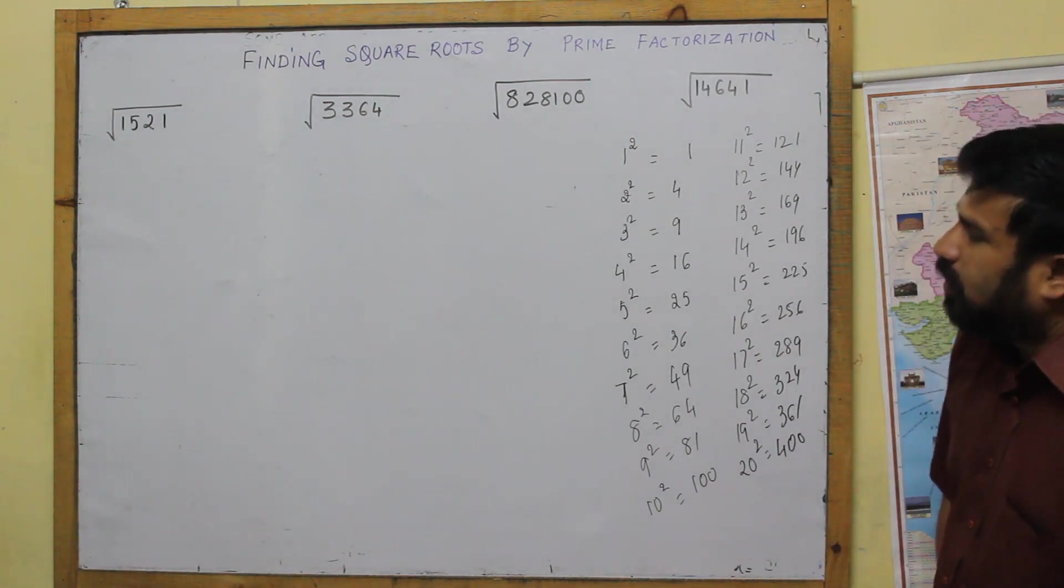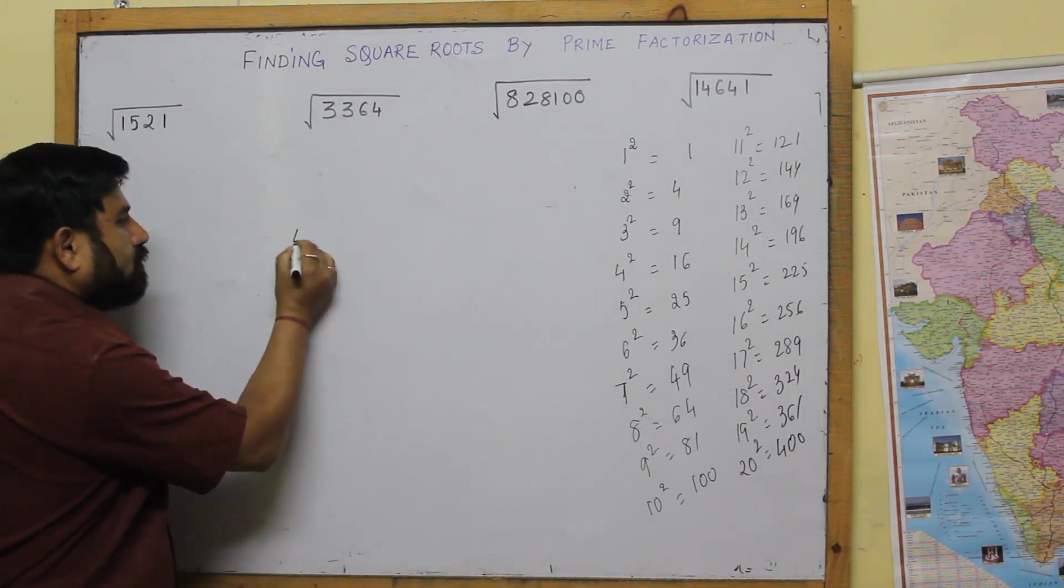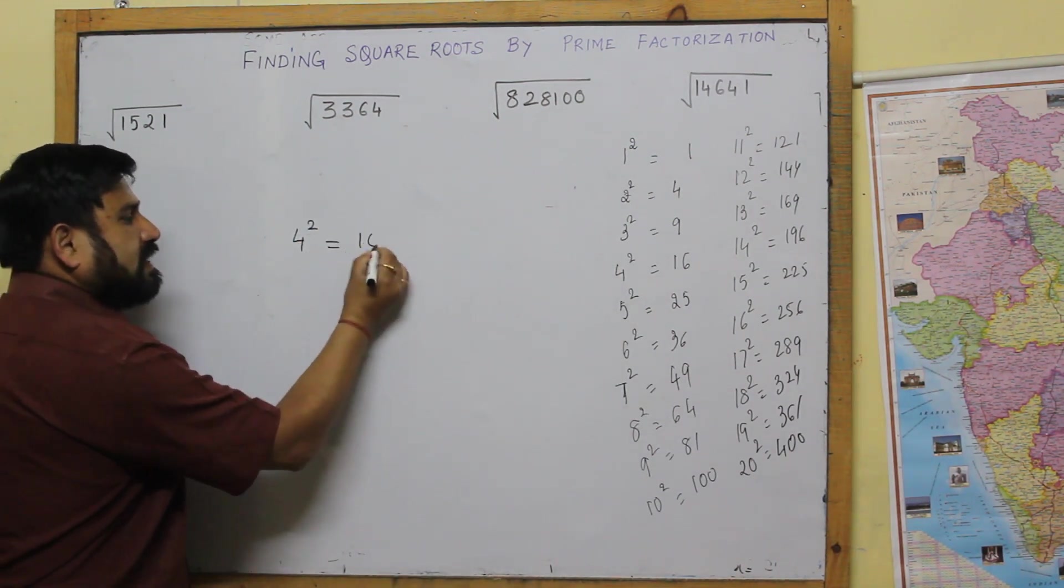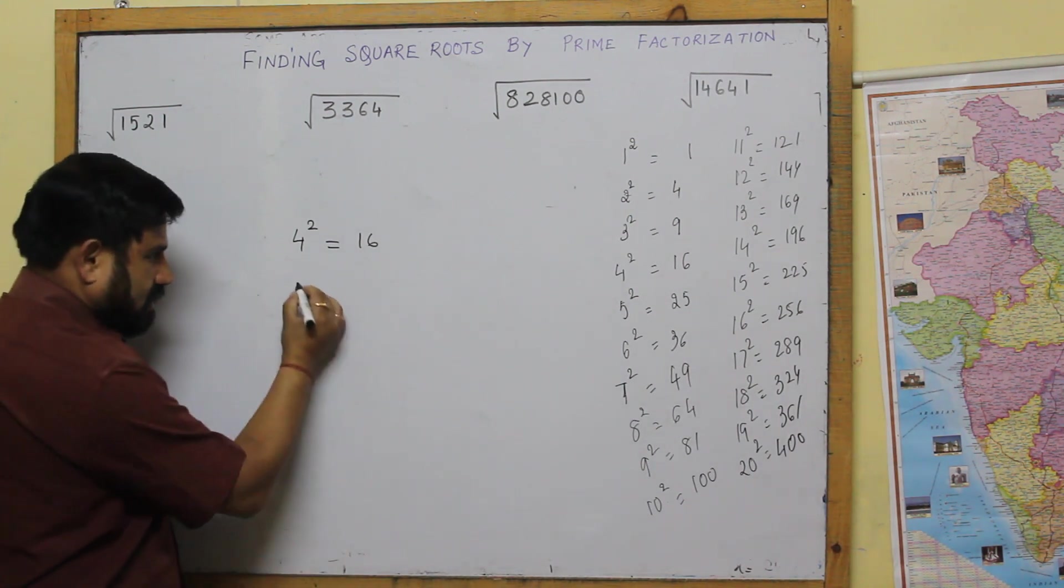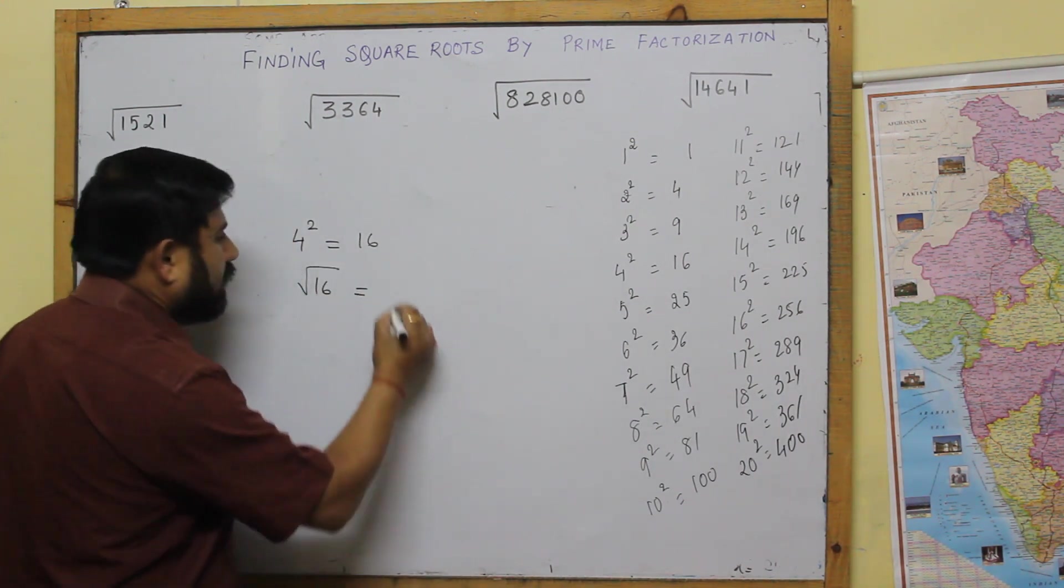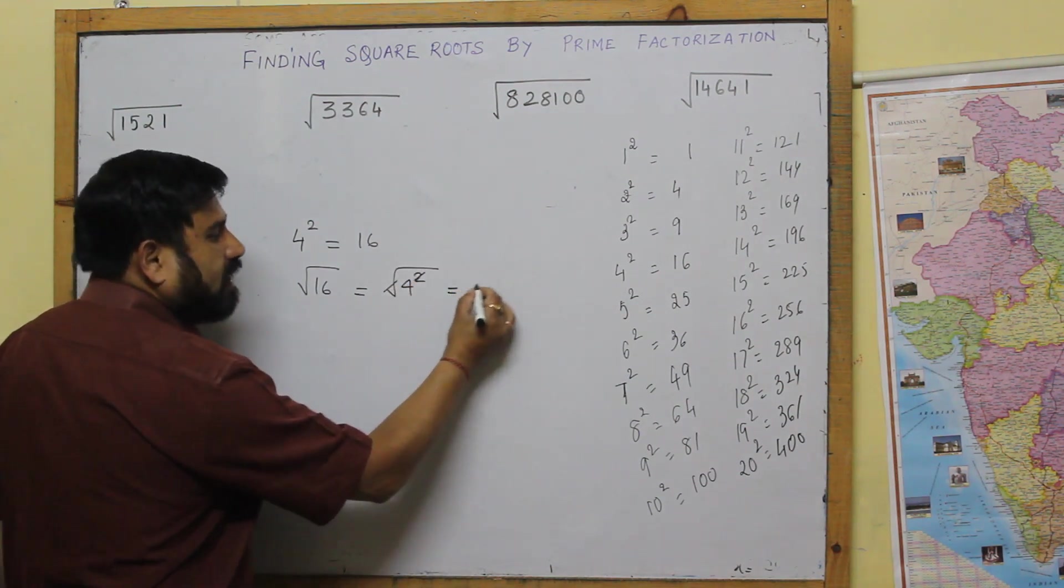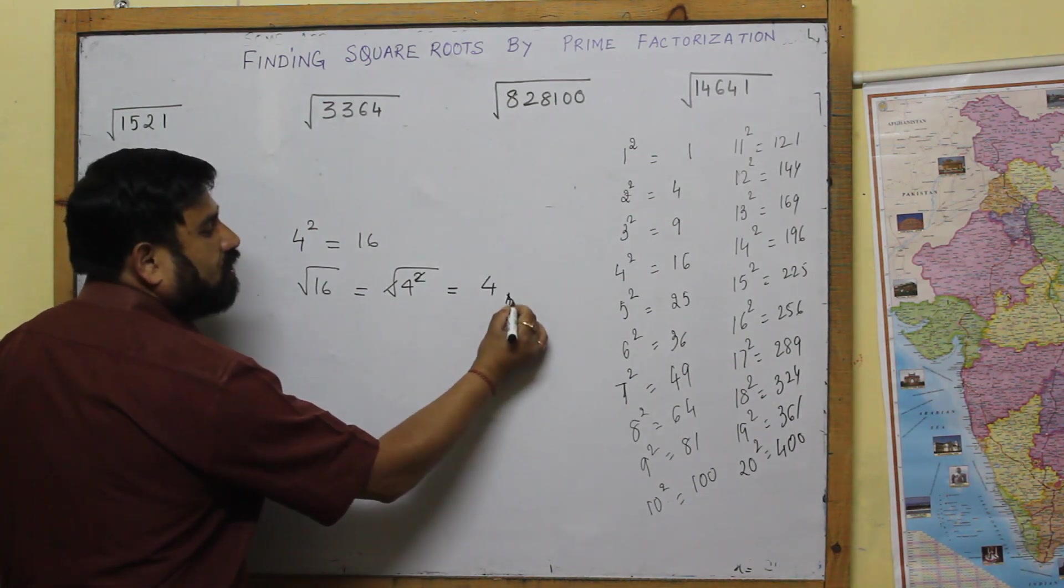Now what is square root all about? Let's take a simple example. From here, we know four square is sixteen. So let's reverse it. Suppose it's going to be square root of sixteen. So square root of sixteen will be square root of four square. This and this square gets cancelled, the answer is going to be four.